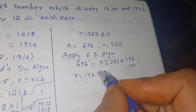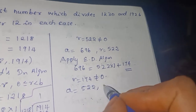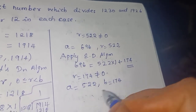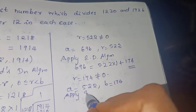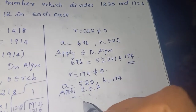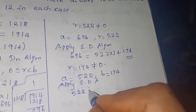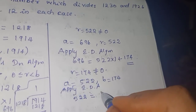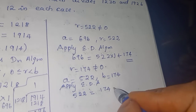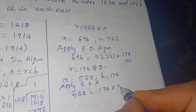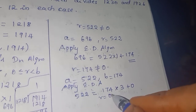Now A is 522 and B is 174. Applying Euclid's Division Algorithm: 522 = 174 × 3 + 0. The remainder is 0, so we stop.